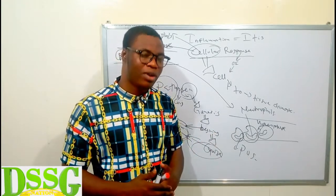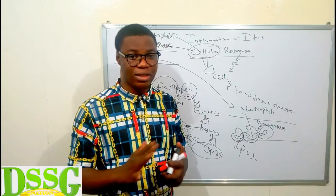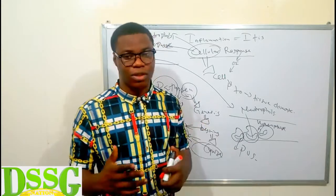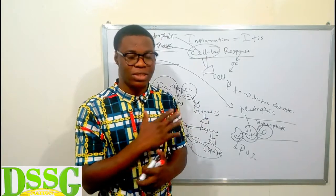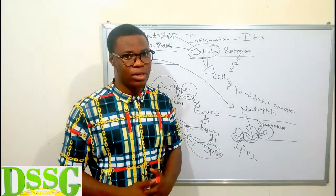After the neutrophils have died and formed pus, the macrophages come in — they are large cells — and clean up the site, packing up the dead cells and debris. That is the cellular response: neutrophils ingest pathogens and form pus upon dying, and macrophages clean up the site.